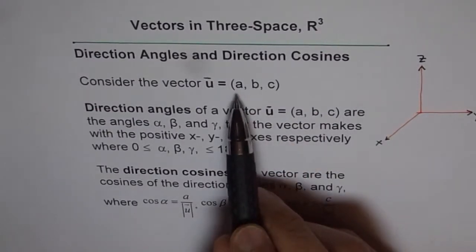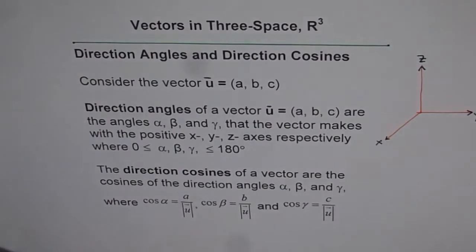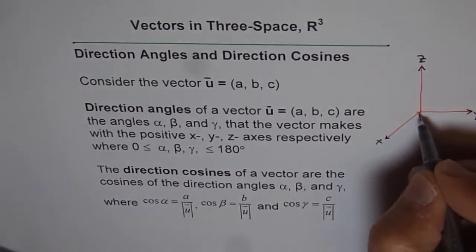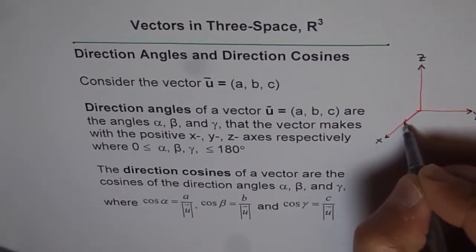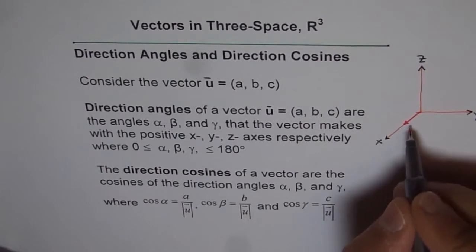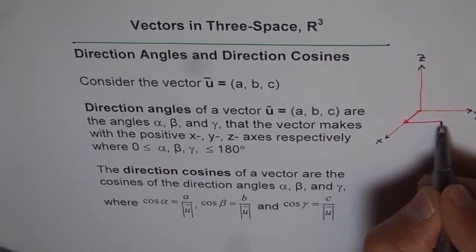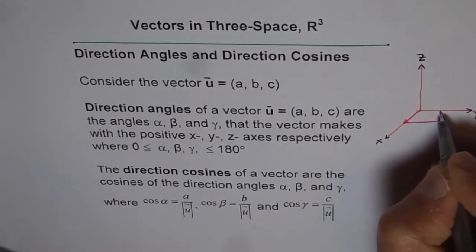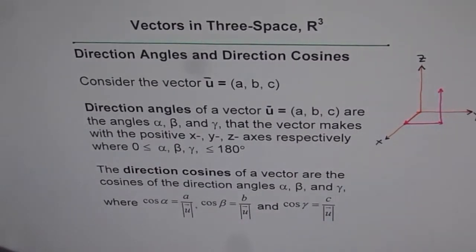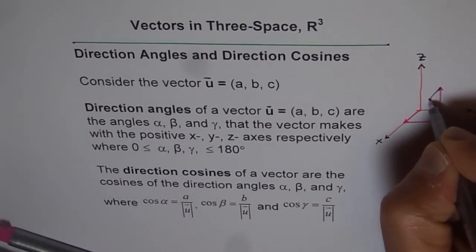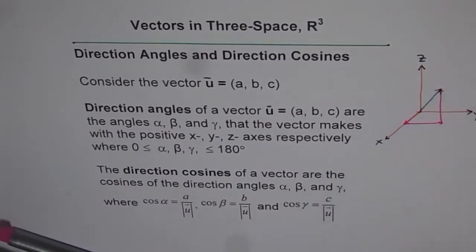If we have a vector (A, B, C), the way to sketch it is to move A units towards X, then B units towards Y — assuming them to be positive for now — reaching a point in the XY plane, and then C units up towards Z. A line joining the origin to this point gives vector U.